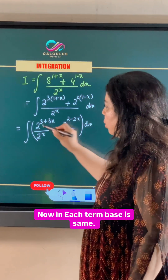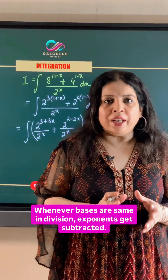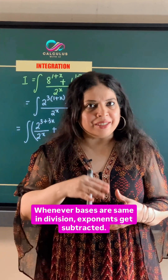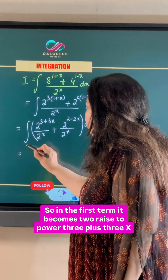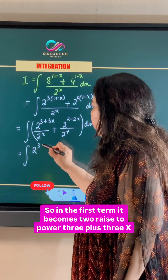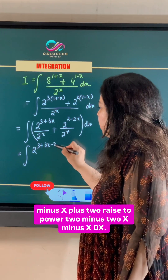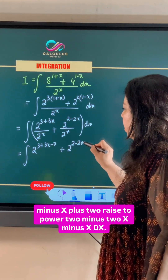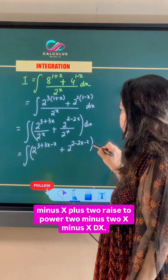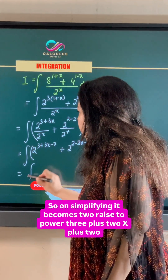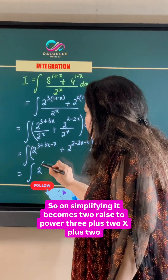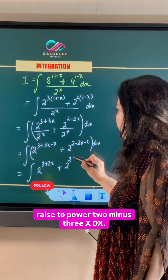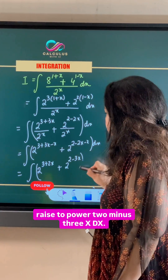Now, in each term the base is the same. Whenever bases are same in division, exponents get subtracted. So in the first term, it becomes 2 raised to power 3 plus 3x minus x, plus 2 raised to power 2 minus 2x minus x dx. On simplifying, it becomes 2 raised to power 3, plus 2 raised to power 3 plus 2x, plus 2 raised to power 2 minus 3x dx.